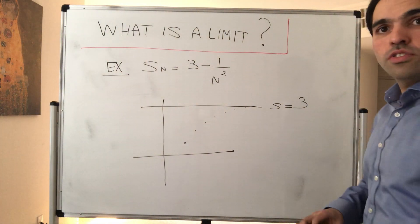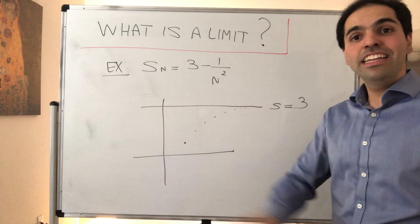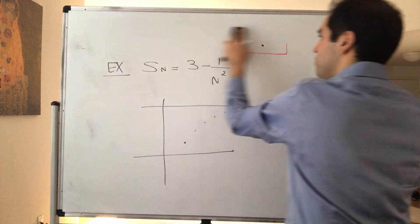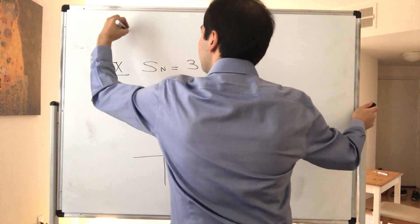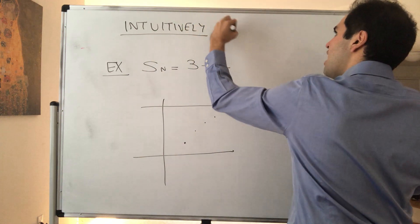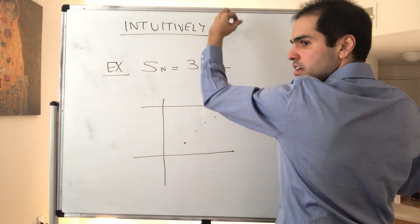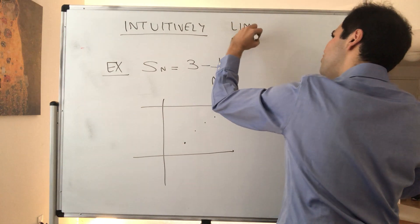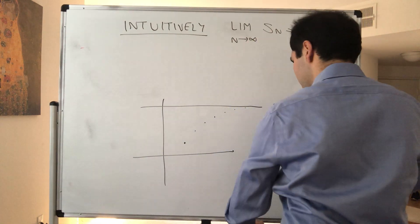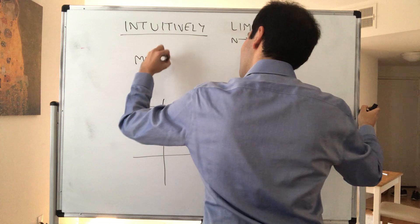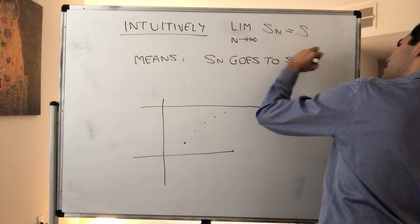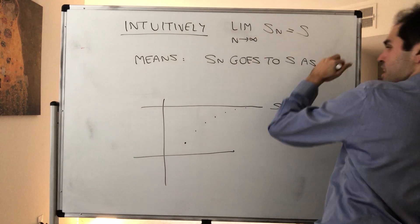We'll start with a very intuitive definition and step-by-step build up to a more rigorous definition. Intuitively, what we would like to say is that the limit as n goes to infinity of Sn equals s, which simply means Sn goes to s as n goes to infinity — as n is large.